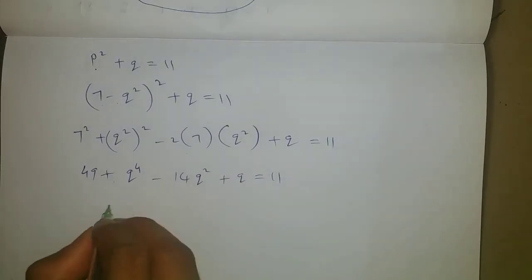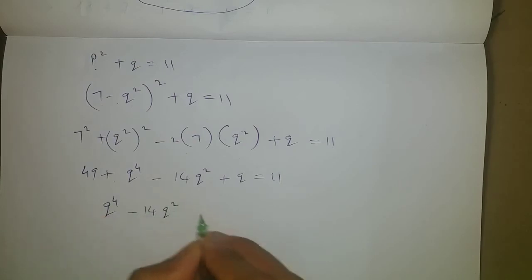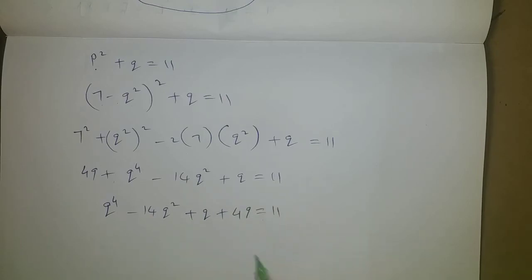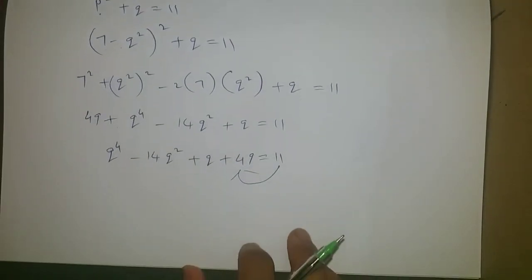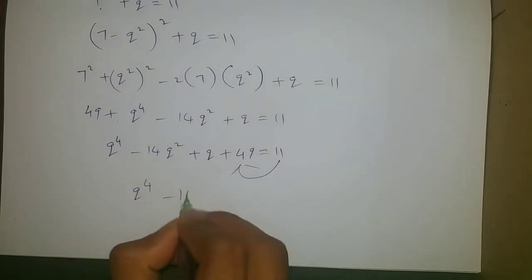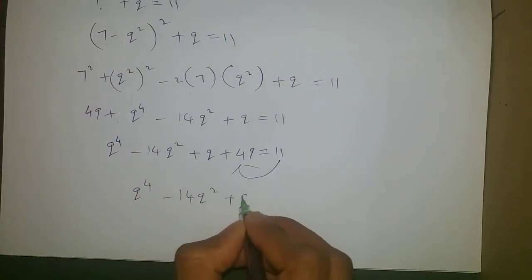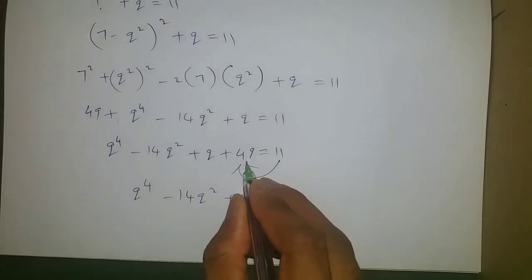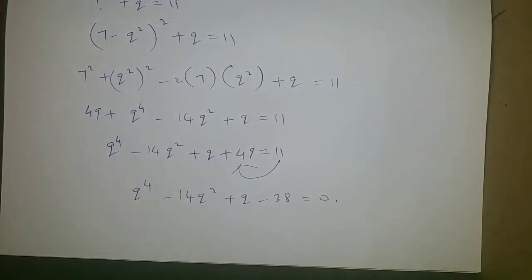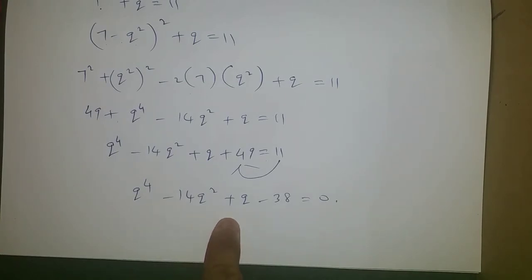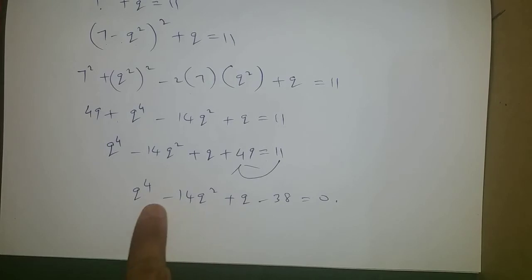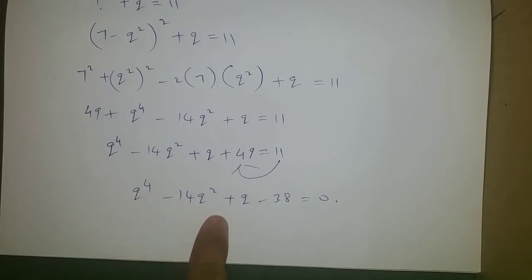Writing in order: q⁴ - 14q² + q + 49 = 11. Bringing 11 to the left side gives q⁴ - 14q² + q + 38 = 0. If this were a quadratic we could split the middle term, but this is a fourth-degree equation, so we cannot apply that method.